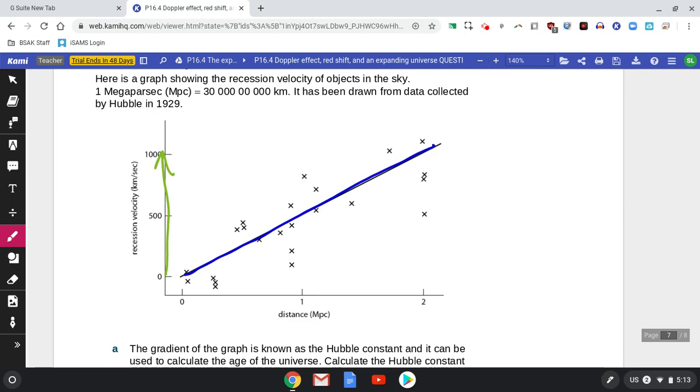Now if you remember, how do you measure gradient? Gradient is rise over run. So in this example it's how much the graph goes up—that's rise—divided by how much it goes across—that's run. So the Hubble constant in this case, H0, the Hubble constant, is how much it goes up, a thousand, divided by how much it goes across, two.